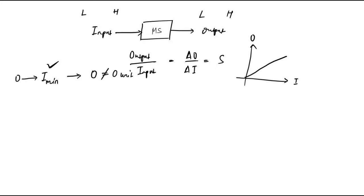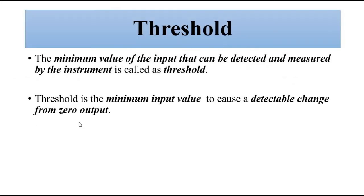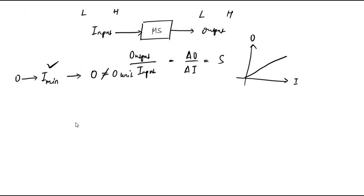The system detects that minimum input and provides some output. That minimum value of the input which produces a non-zero output is called the threshold. It is the minimum value of the input that can be detected by the measuring instrument, and it gives us a reading. That is called threshold.